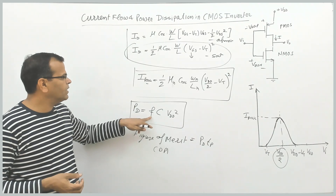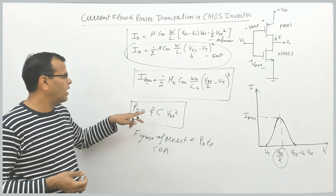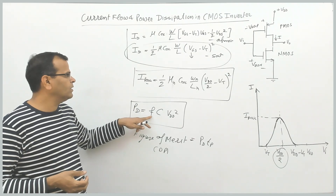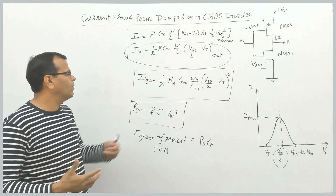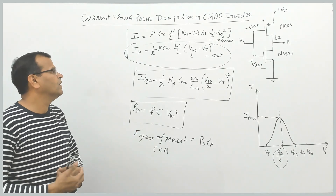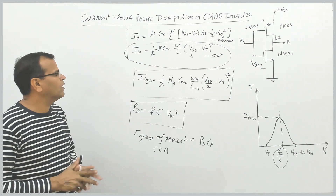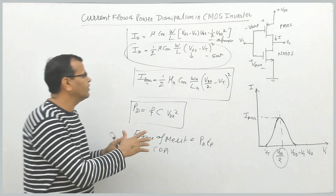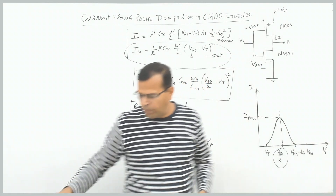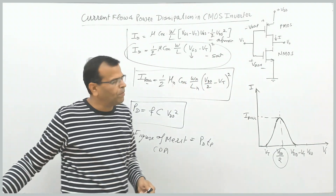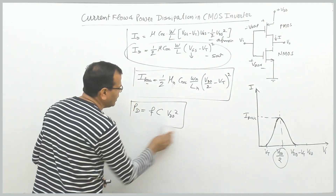Higher frequency means less propagation delay but higher power dissipation. That is the meaning of the delay-power product figure of merit.